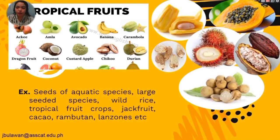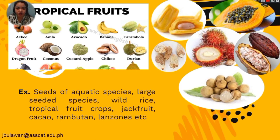The seed embryo of recalcitrant seeds is larger than orthodox seeds, where the orthodox embryo is only 15% of the size, and they are killed if moisture content is reduced below critical values of 12 to 30%, and are susceptible to freezing below 0 degrees Celsius or chilling from 10 to 15 degrees Celsius. These are typically tropical fruits whose seeds need to be stored at the specified moisture content.